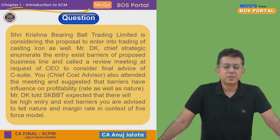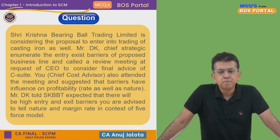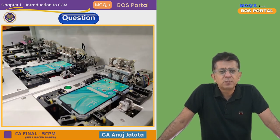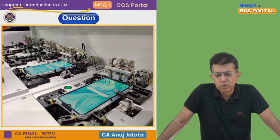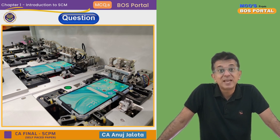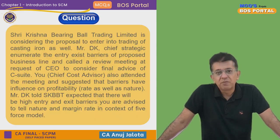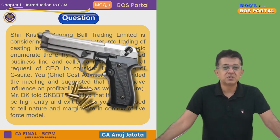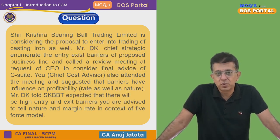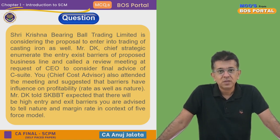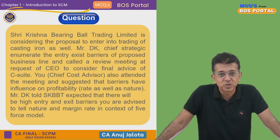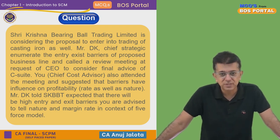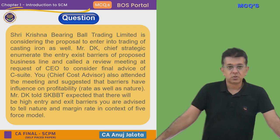Suppose you become a CA and you want to manufacture mobiles — the problem could be that you require a huge amount of capital, and that is the entry barrier. Or suppose you want to enter into the business of manufacturing arms — you cannot, because the government creates an entry barrier. Not every company can manufacture arms and ammunition; they require a specific licence.